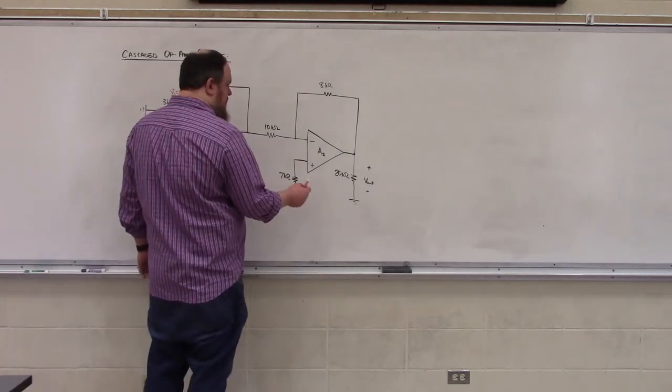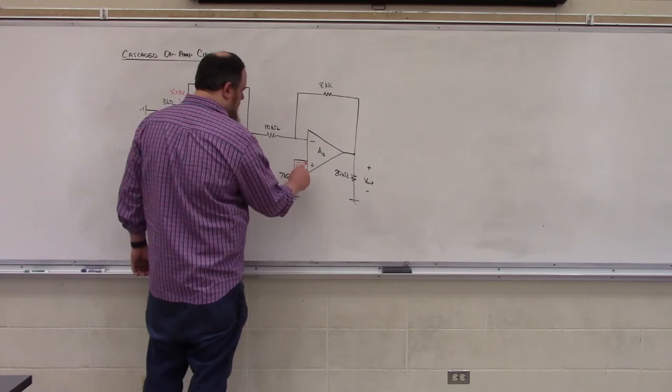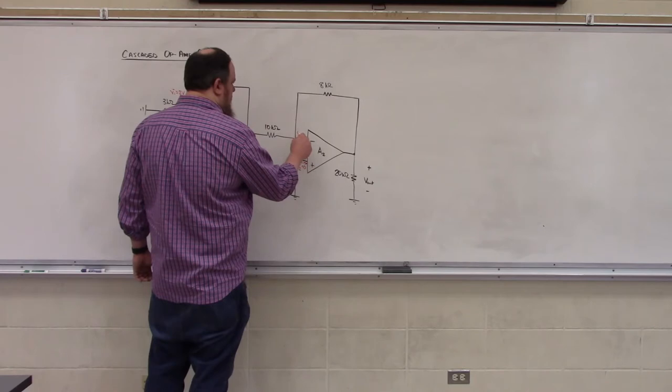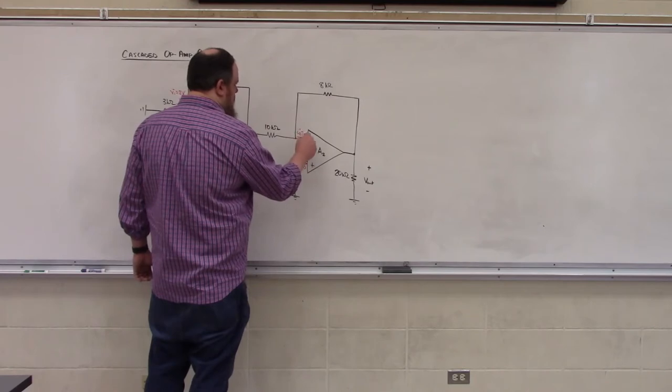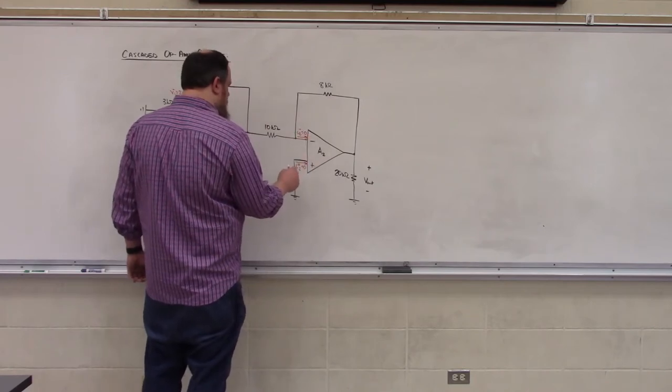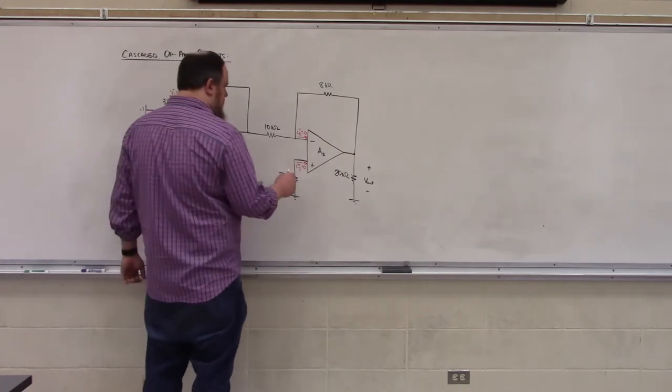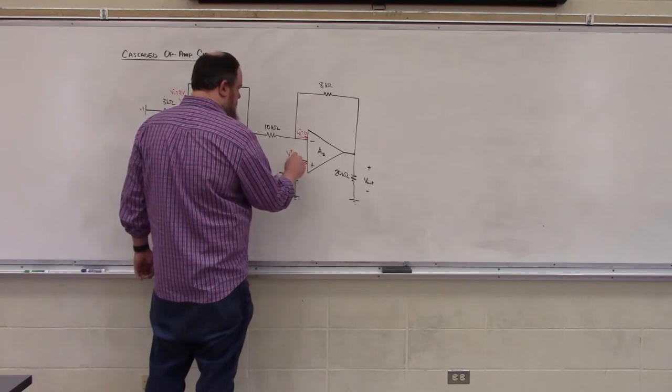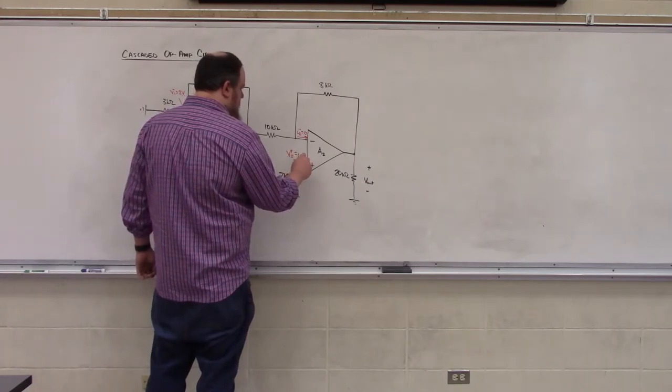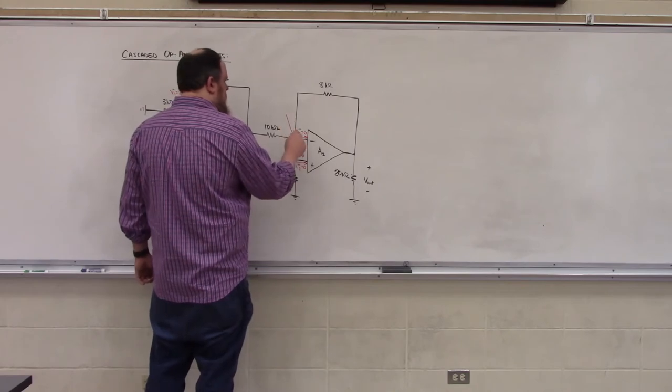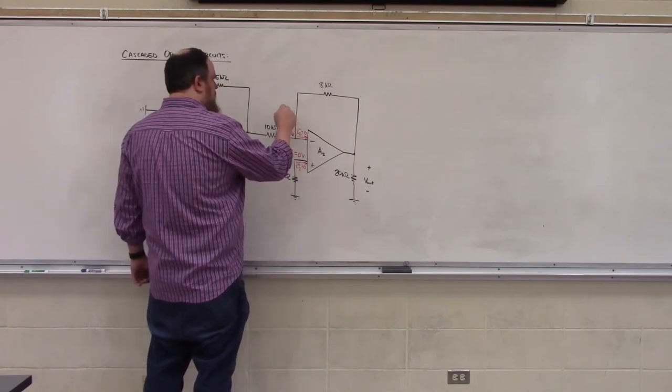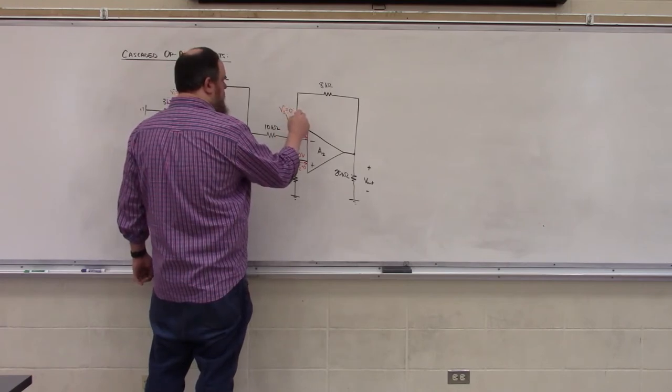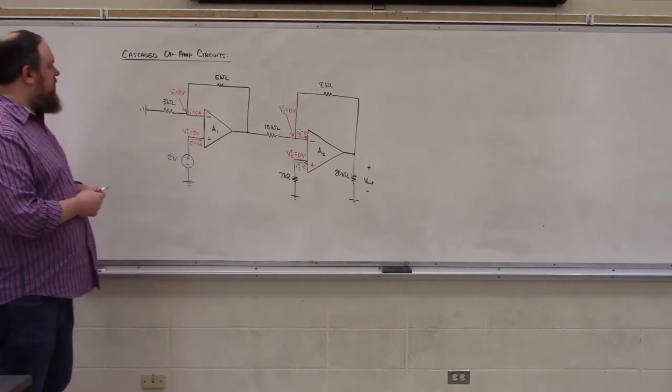For our second op amp, I plus 2 must be 0. I minus 2 must be 0. Since no current can flow through the 7 kilohm resistor, V plus 2 is going to be 0 volts. And our voltage here, V minus 2, will also be 0 volts.